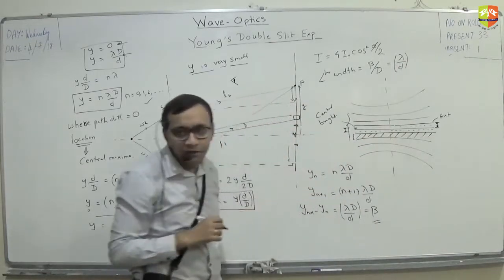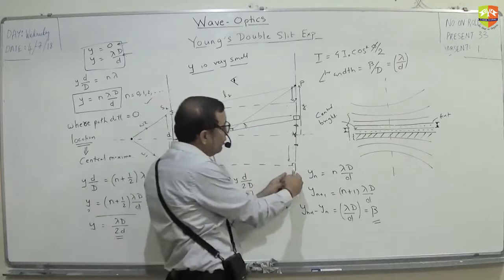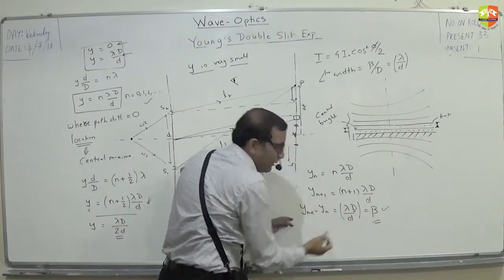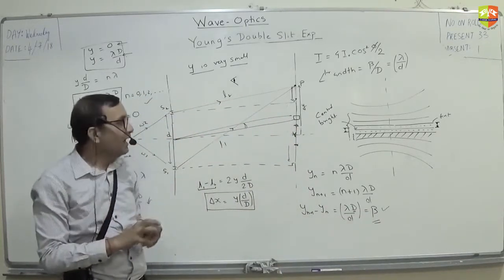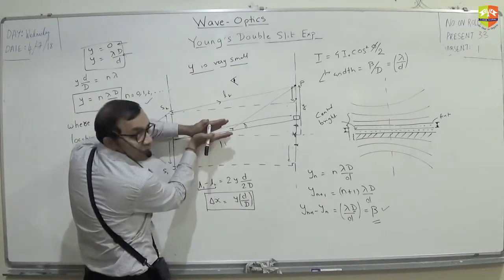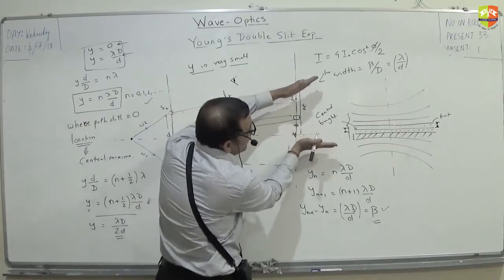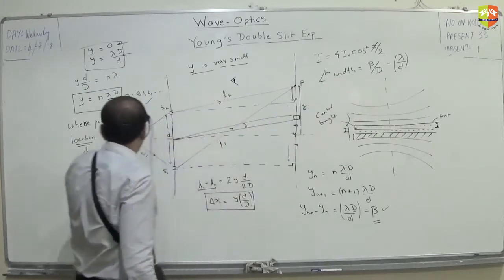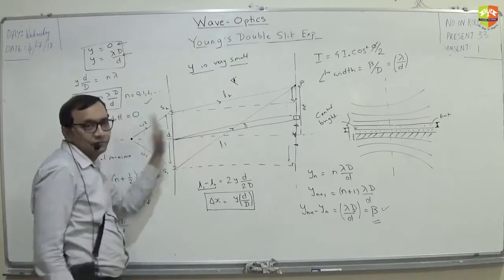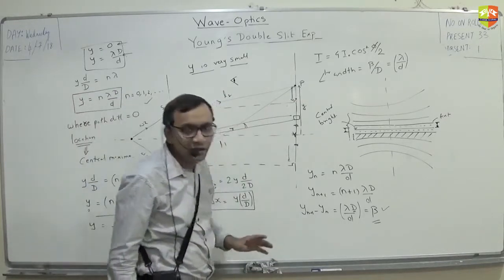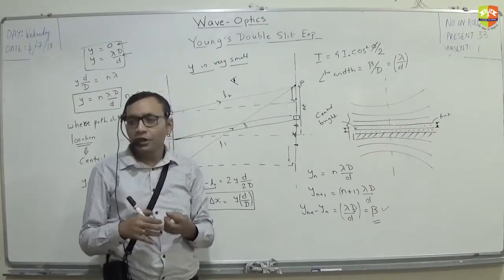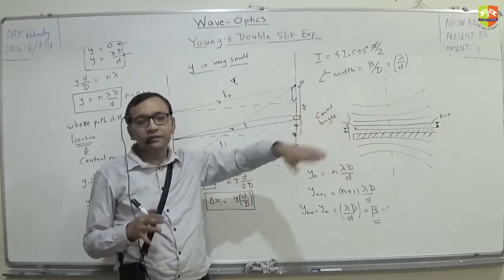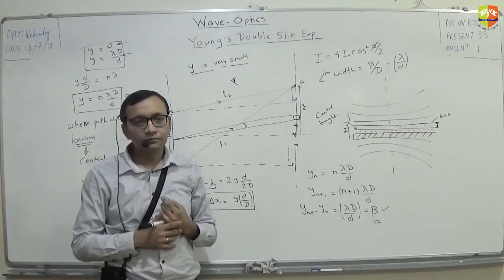Why are we finding angular width? Because when you move the screen away, the fringe width increases — it depends on capital D. But the angle will not change; as you move the screen, the angle only slightly opens up. So angular width is independent of where you place the screen, and it should not depend on the screen. Angular fringe width is therefore a better representation of the experimental outcome.